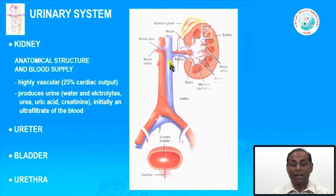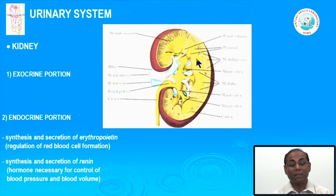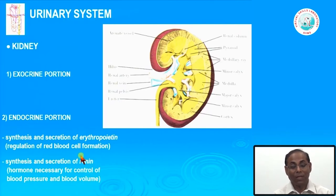The kidney is connected to the urinary bladder by the ureter, and then to the urethra—this is the gross anatomical urinary system. The kidney itself has an exocrine portion related mainly to excretory function, and it also has endocrine functions. The two most important hormones produced by the kidneys are erythropoietin, important for regulation of red blood cell formation, and renin, which is extremely important for maintaining blood pressure through the renin-angiotensin system and regulating blood volume.